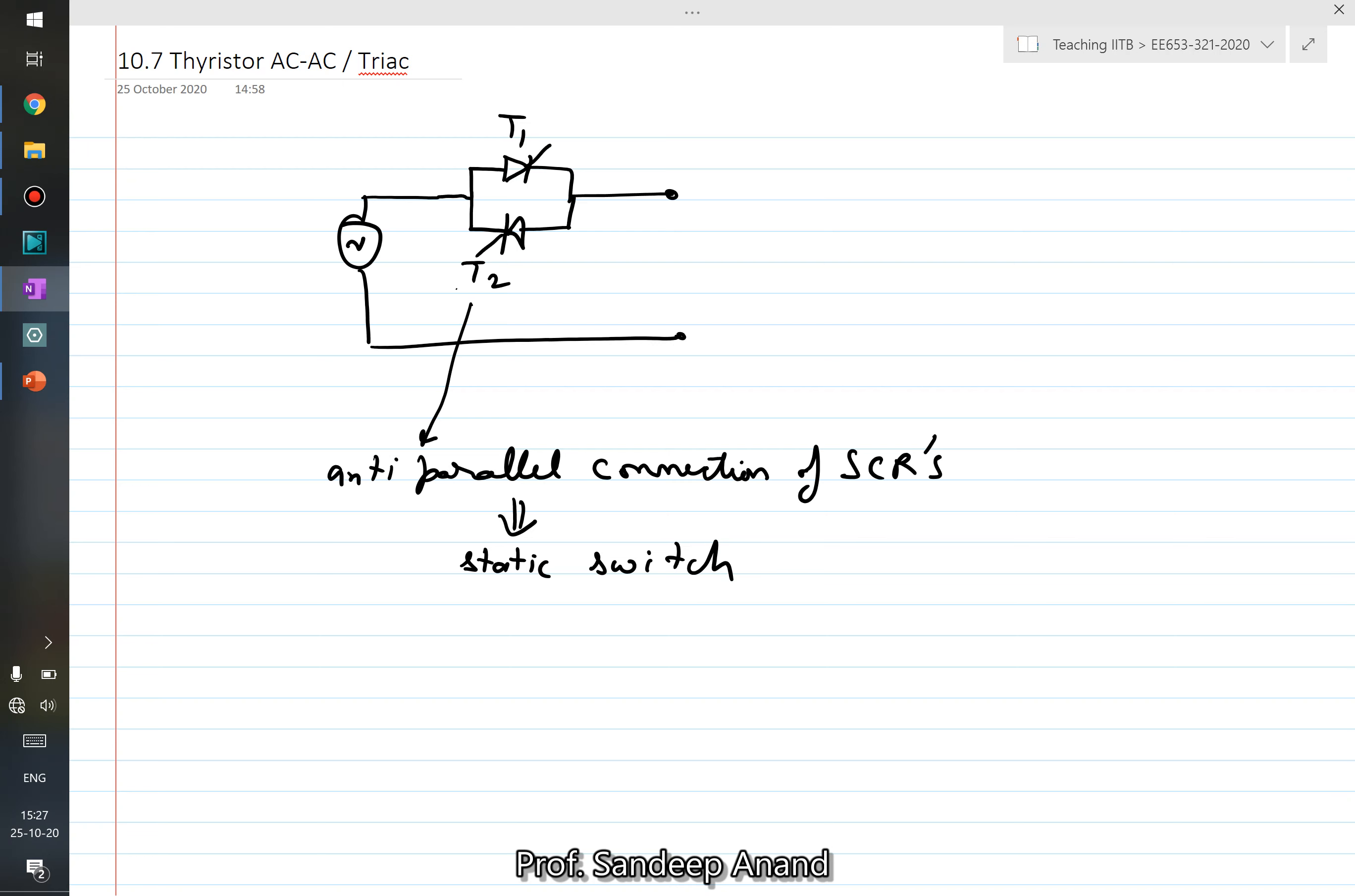This same basic operation is also applicable for a triac which is a device which is popularly used to control the fan speed. Now, what happens here? Let us just for simplification start with the understanding of what if we connect the resistance here R. So let us say this is your input voltage VN and I am giving trigger pulse to T1 here and trigger pulse to T2 here.